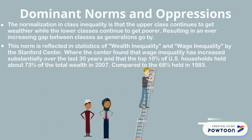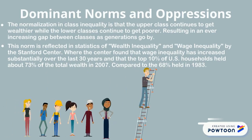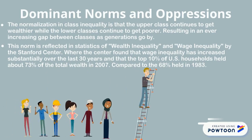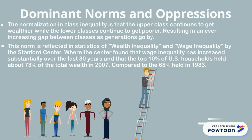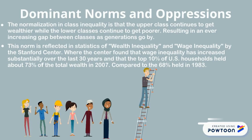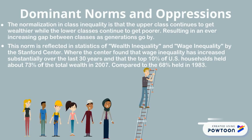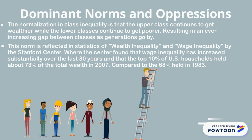Normalization in class inequality is that the upper class continues to get wealthier while the lower classes continue to get poorer, resulting in an ever-increasing gap between classes as generations go by. The Stanford Center found that wage inequality has increased substantially over the last 30 years, and that the top 10% of U.S. households held about 70% of the total wealth in 2007, compared to 68% held in 1983.